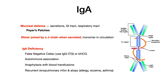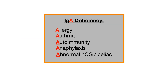The highest yield part of IgA, besides mucosal defense, is its clinical association with IgA deficiency. If the test writer wants to test you on IgA deficiency, you'll be given one of four things: a false negative celiac test, association with other autoimmune conditions, anaphylaxis if a patient with IgA deficiency undergoes blood transfusions, or recurrent sinopulmonary infection and allergy/eczema/asthma. Remember: A for allergy, A for asthma, A for autoimmunity, A for anaphylaxis, A for abnormal celiac.